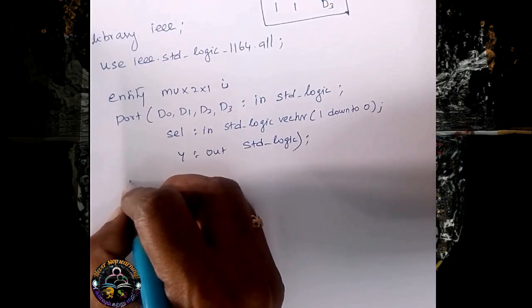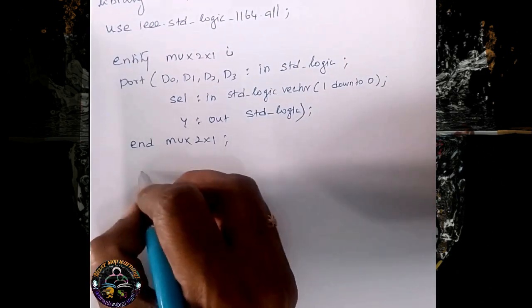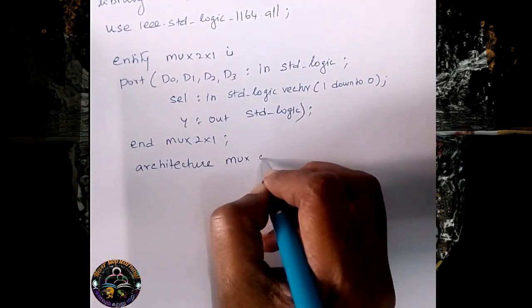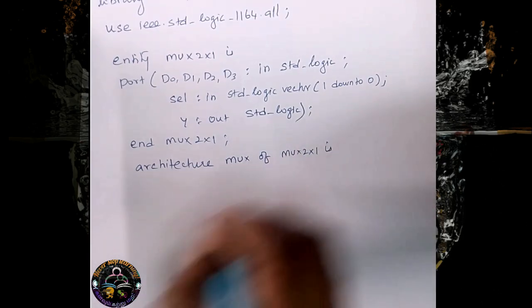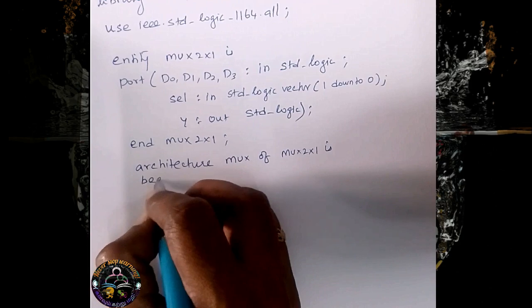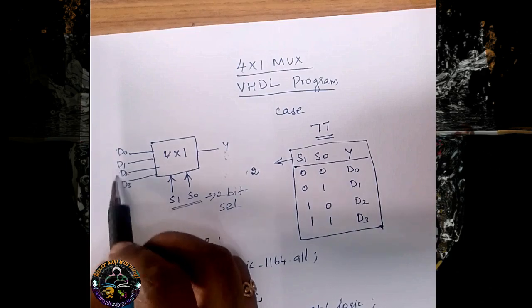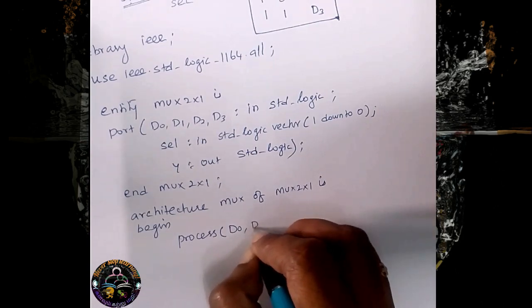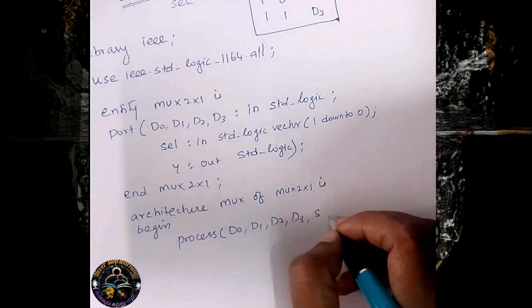Now we end our entity with the entity name. After this, we declare our architecture — architecture followed by the name of our architecture, and this architecture is for our entity. We write 'begin', then we write 'process'. Within the process we list out all our changing inputs: D0, D1, D2, D3, and then S1 and S0 — which we have named as 'sel'.